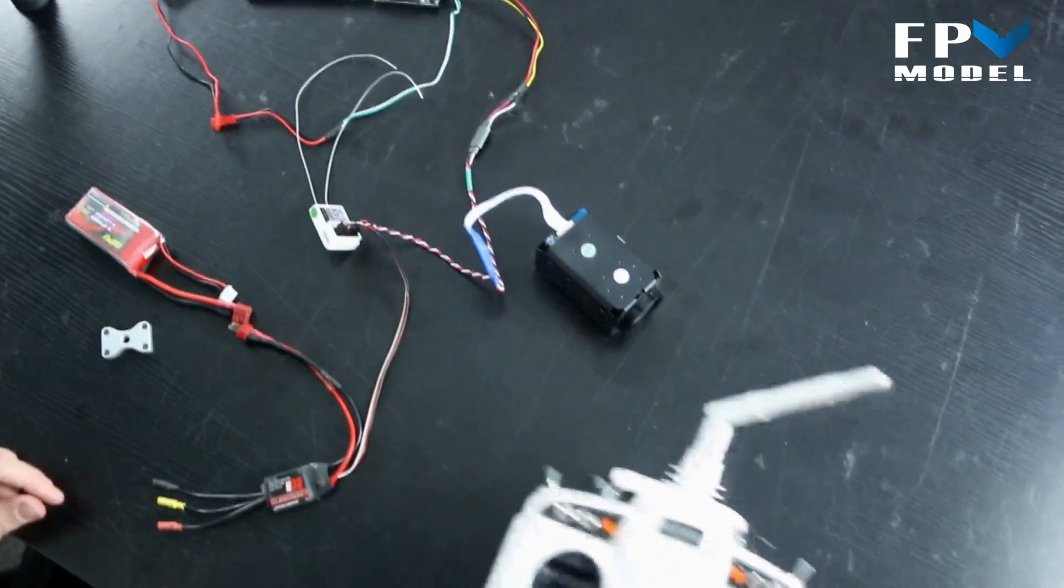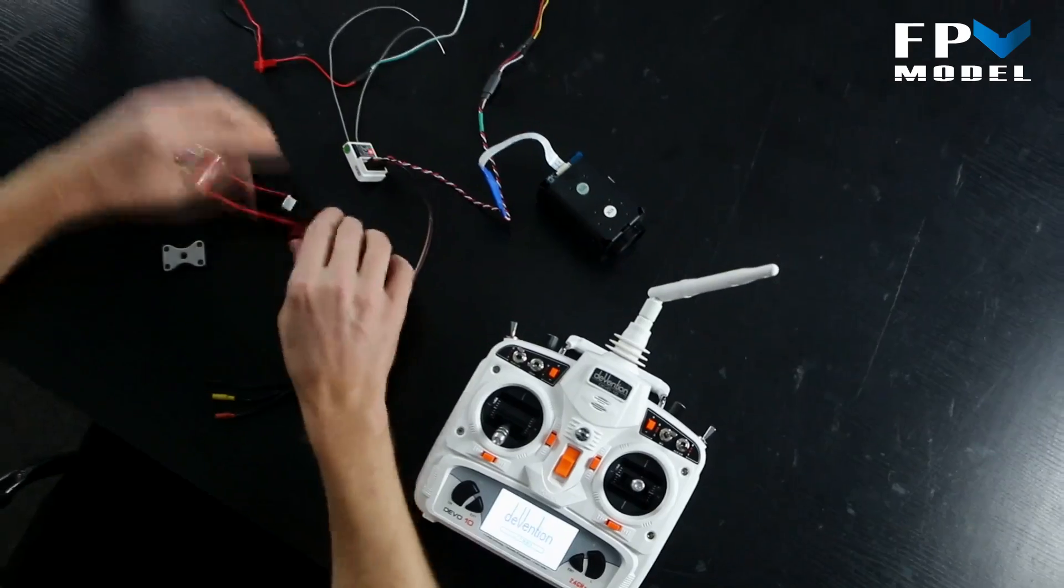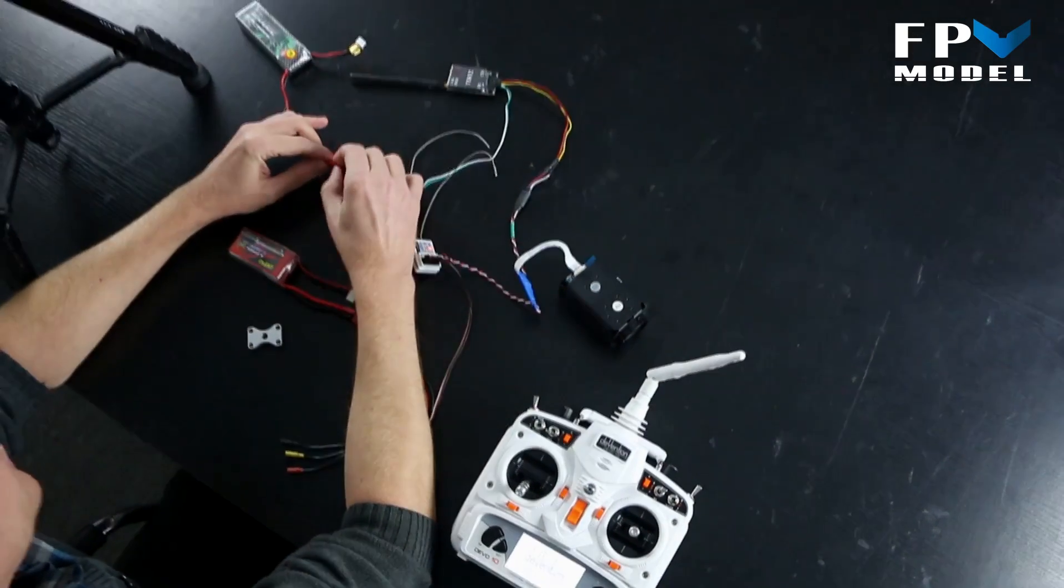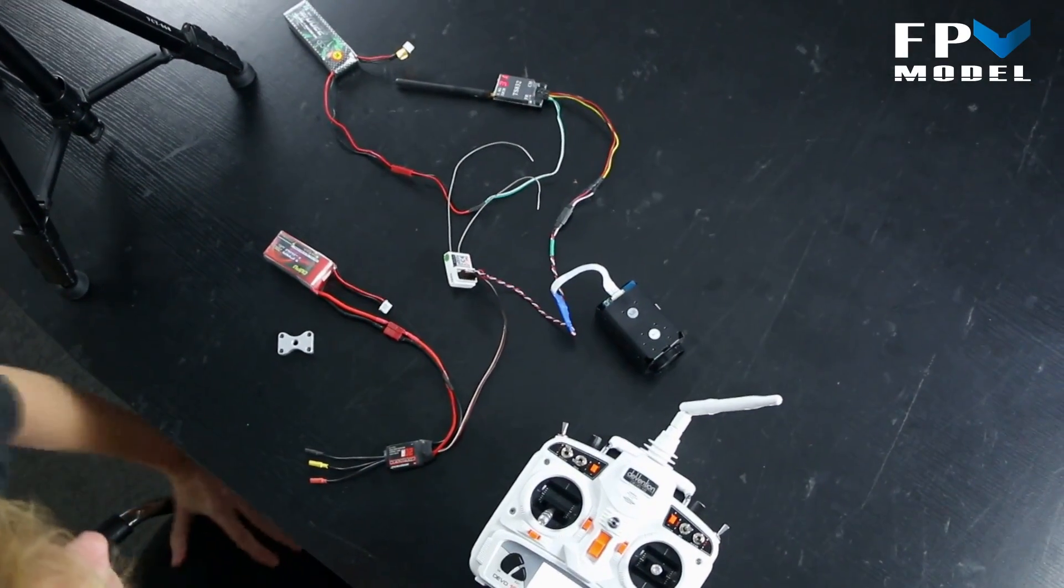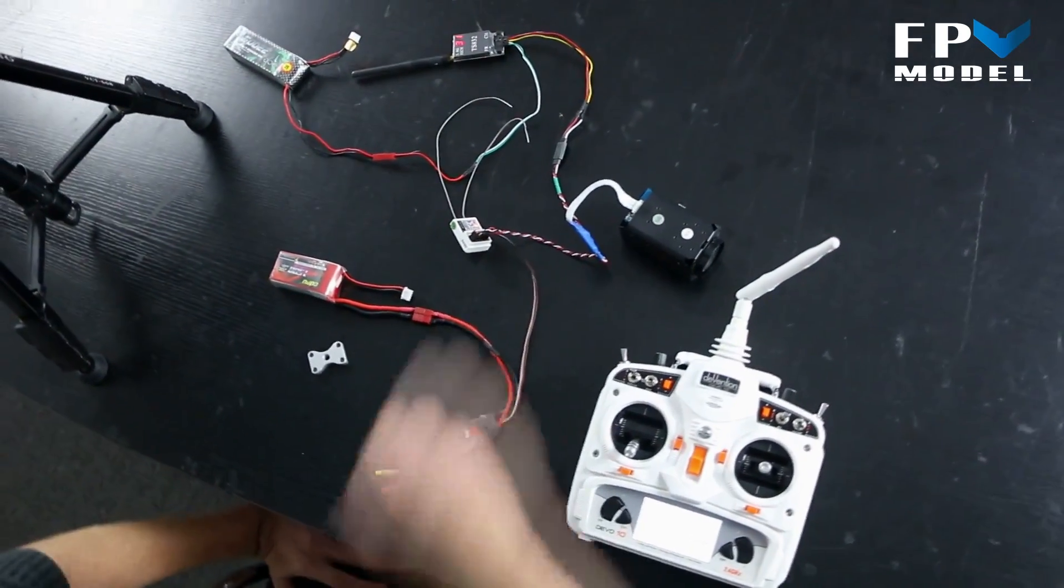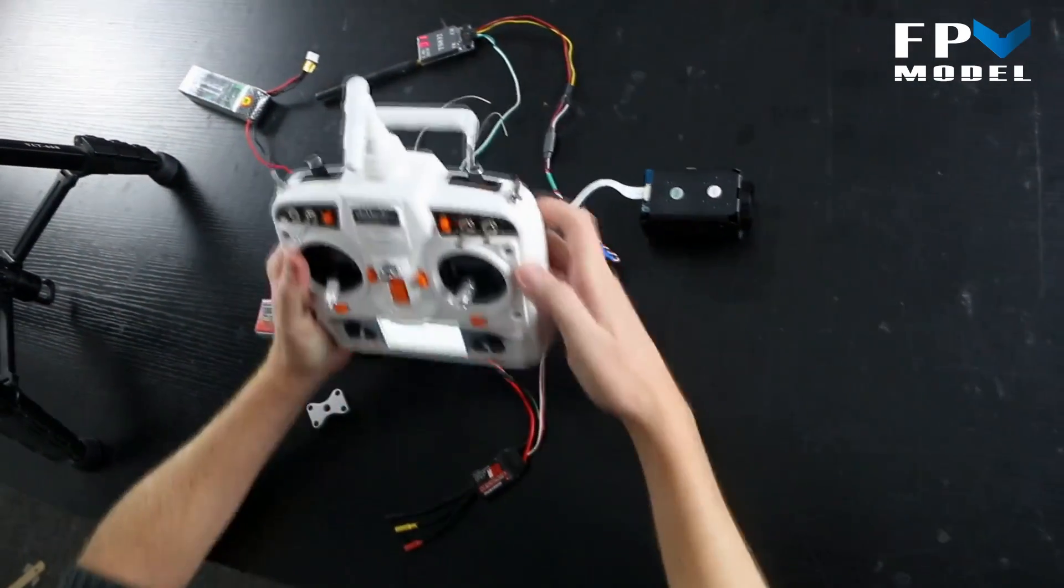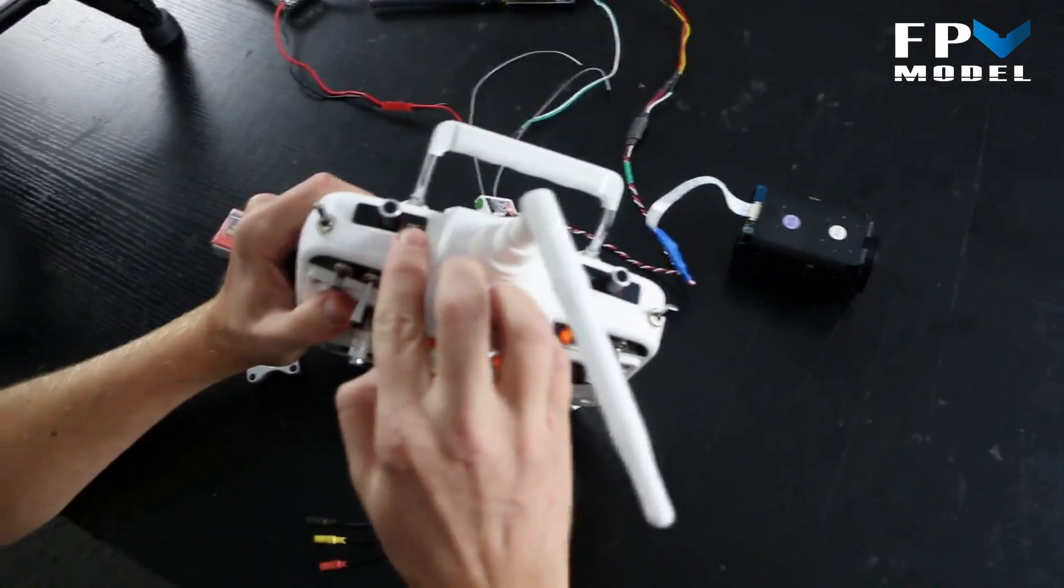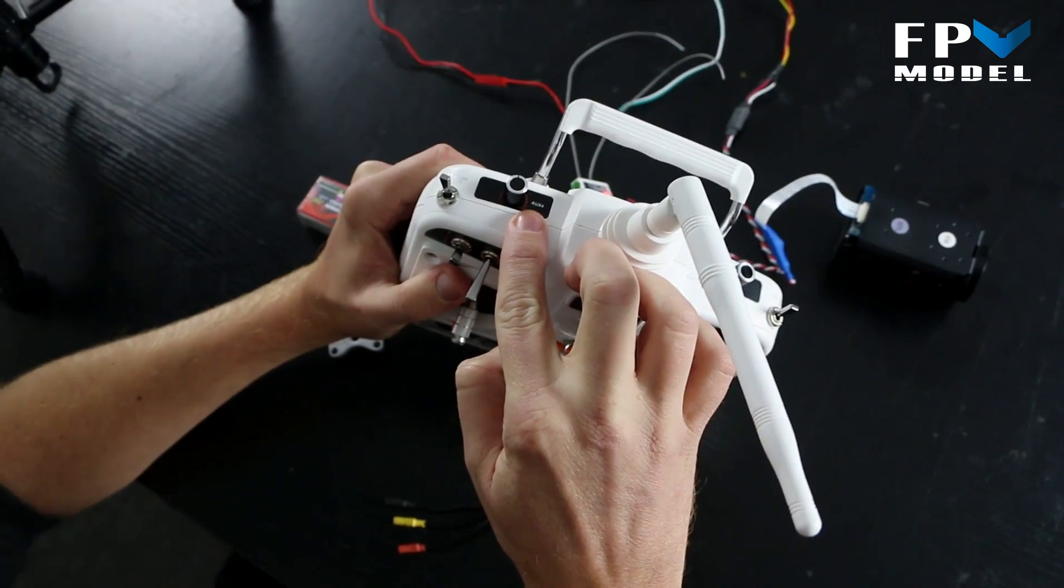So what we're going to do is go ahead and power everything on and show you how it works. Just go ahead and plug this in. So with the camera and the power going out to the ESC to power on the RX, we've got everything set up here. The switches on the camera - what we've done is we've just had to assign two switches. One is the dial knob, that's what we're using to control the zoom.